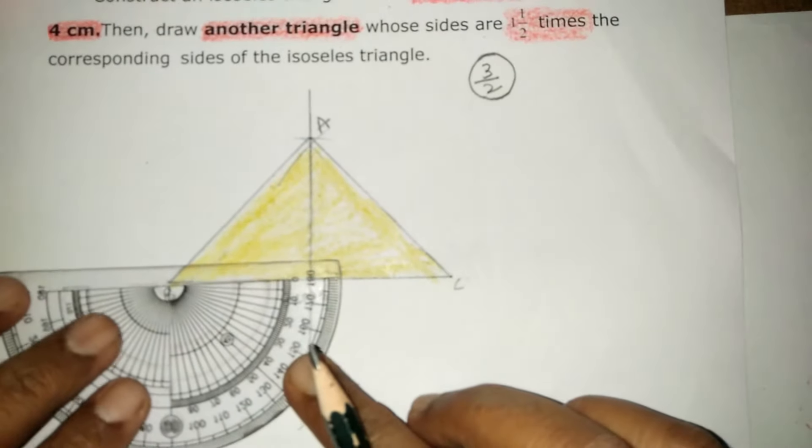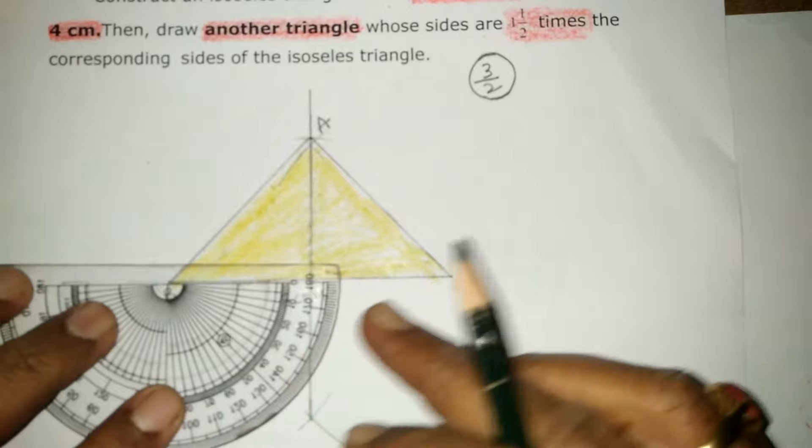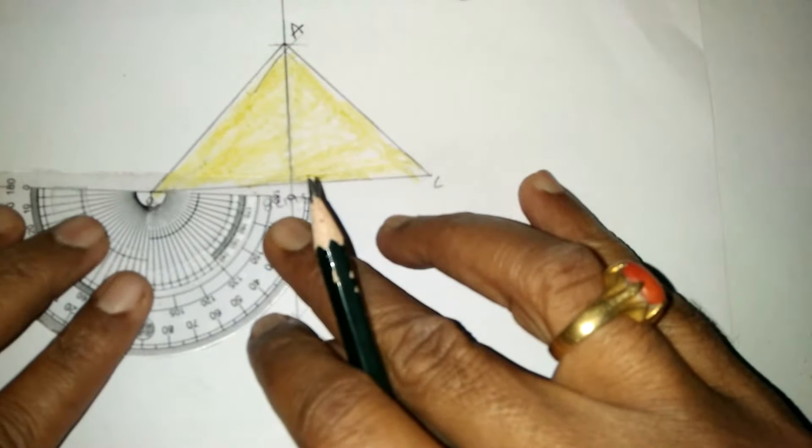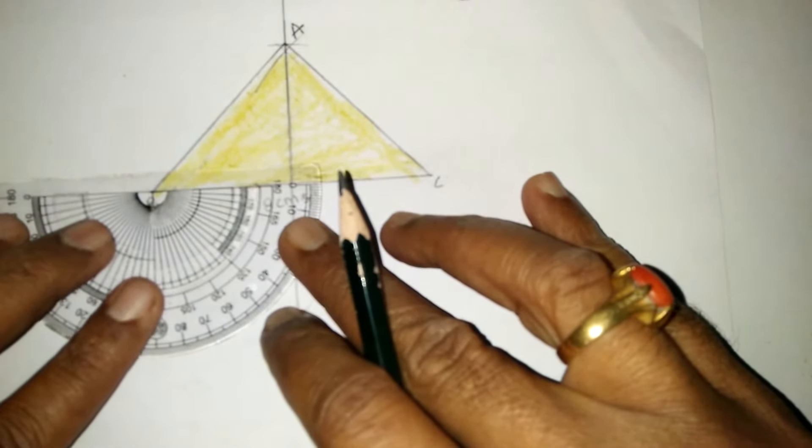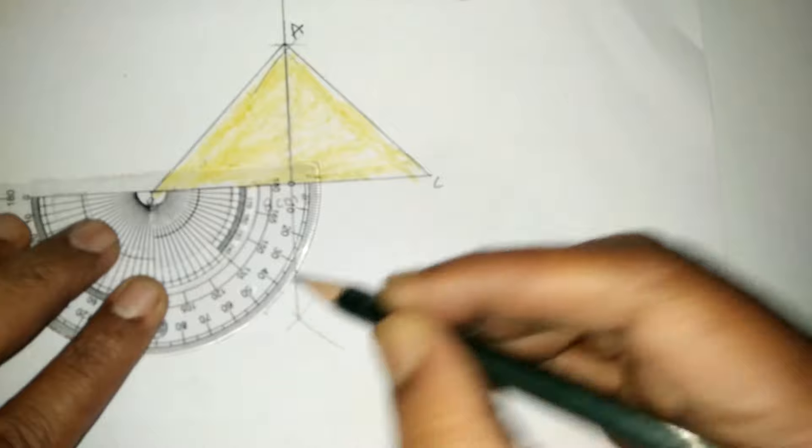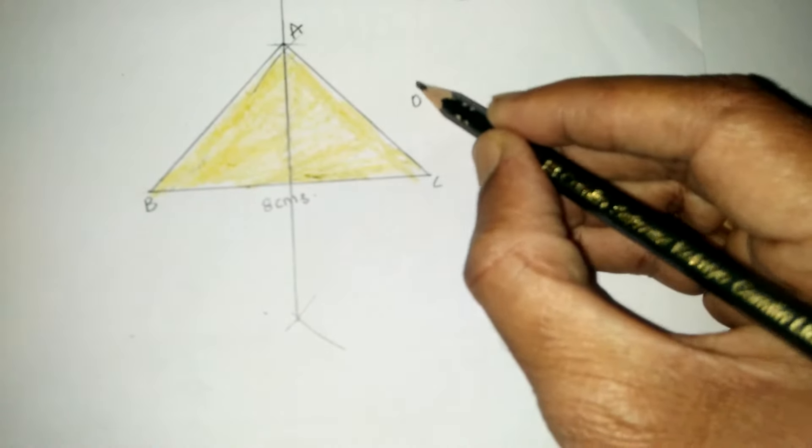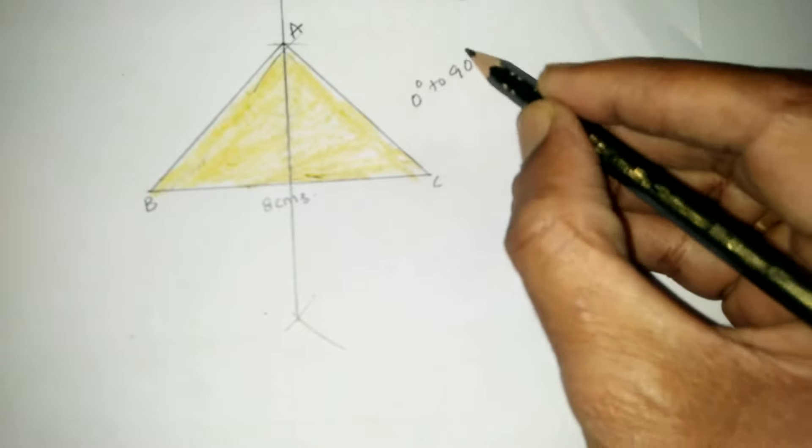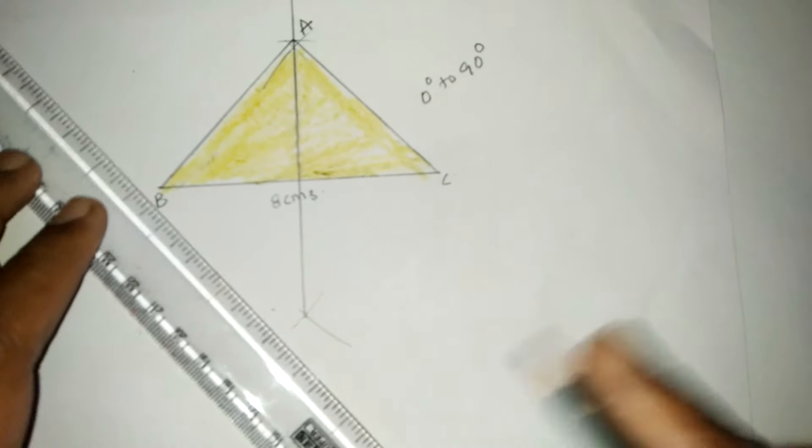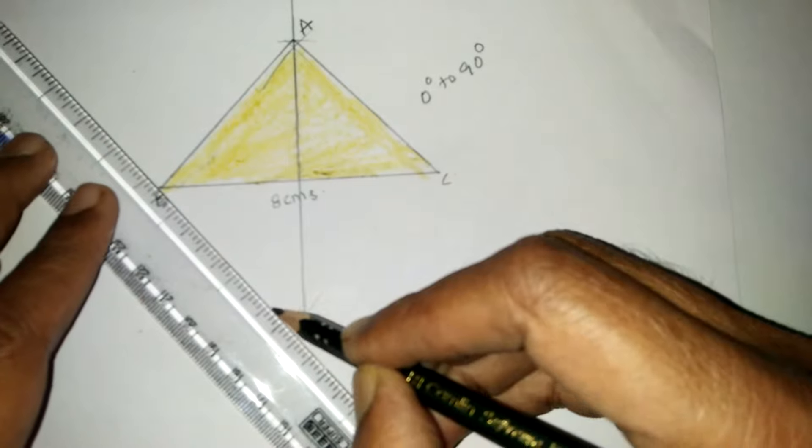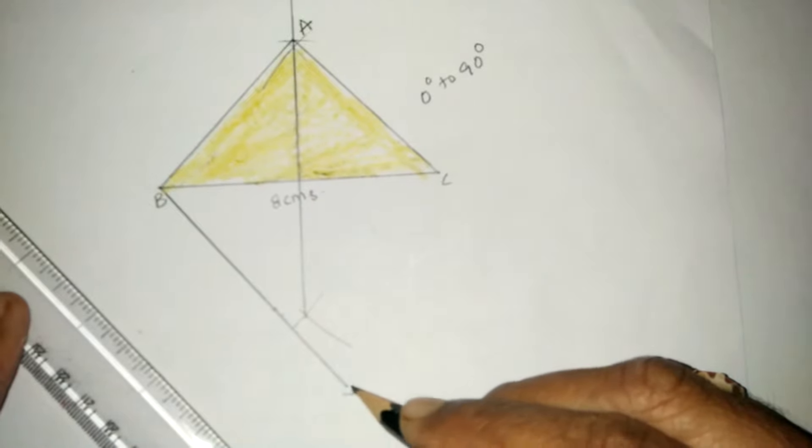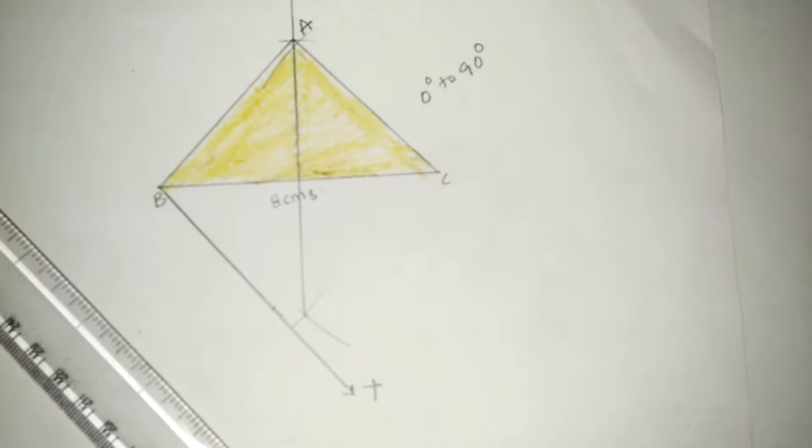First, take an acute angle with B. I am taking 50 degrees. Between 0 to 90 is an acute angle. Name it as X. Ray BX.